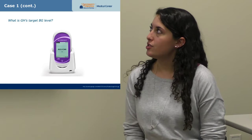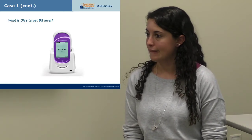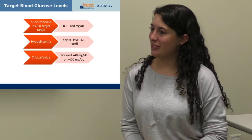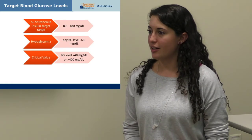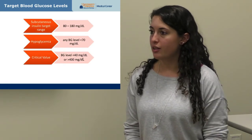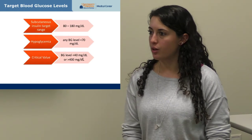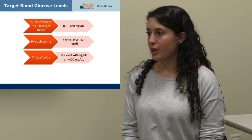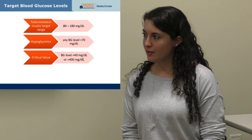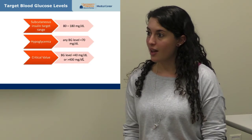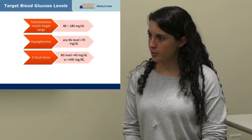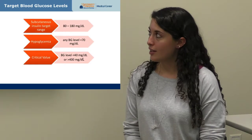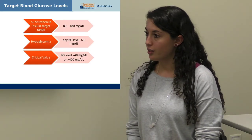G.H.'s target blood glucose level in the hospital is 80 to 180. We allow hospitalized patients to run a bit higher than their home target because illness can raise blood glucose, and the risks of mild hyperglycemia are much lower than the risks of hypoglycemia. Hypoglycemia is defined as less than 70, with critical values being less than 40 or greater than 400.